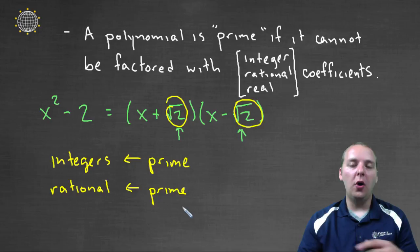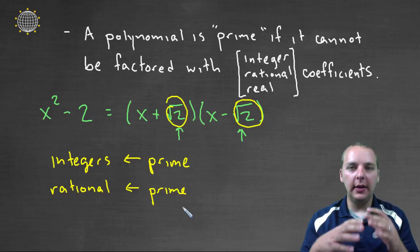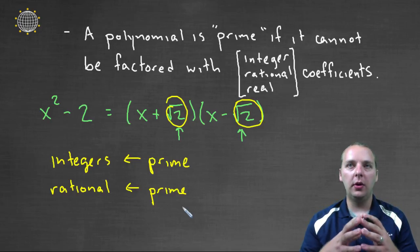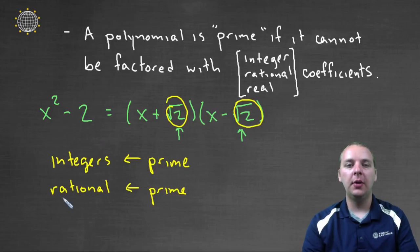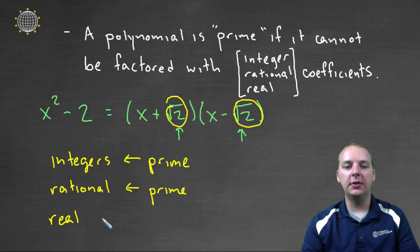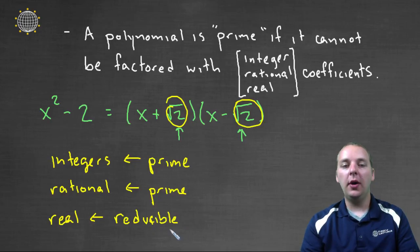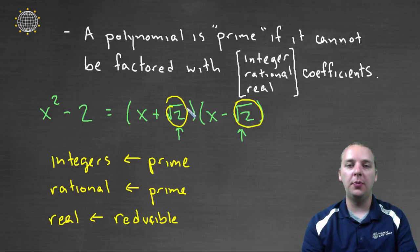But if you open it up a little bit and are a little bit more loose with your interpretation of prime or factorable, and we allow ourselves real coefficients, which is like what the square root of two is, then this would be what we call reducible, because we were able to factor it if you allow me to have real numbers here in my factored form.